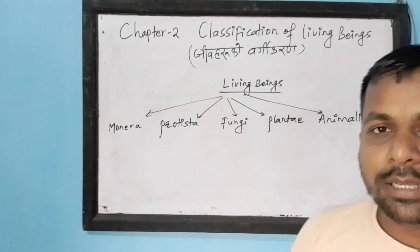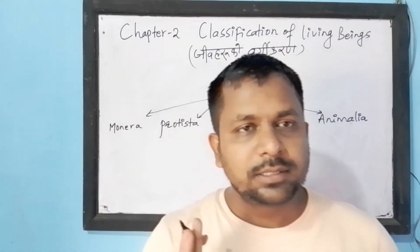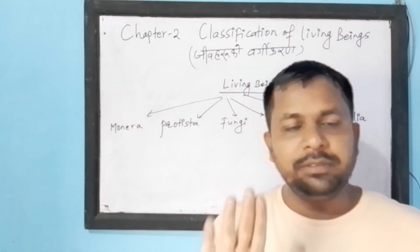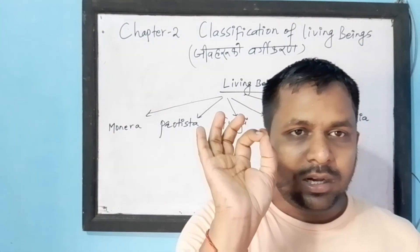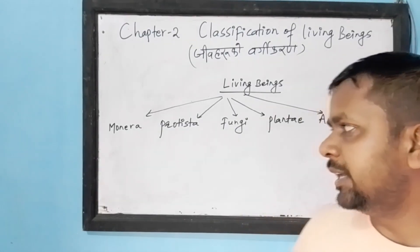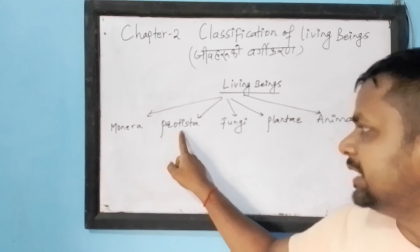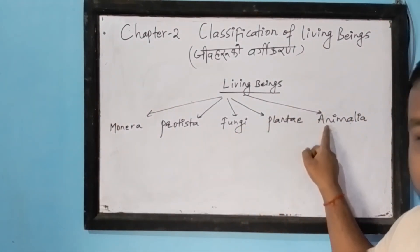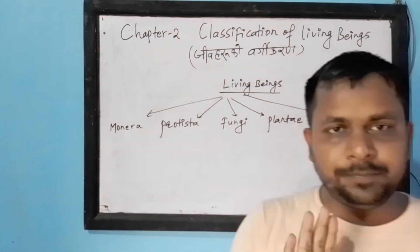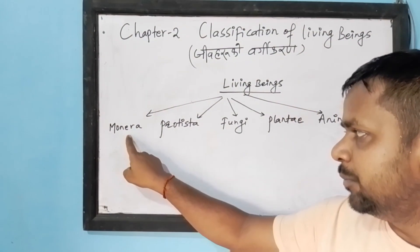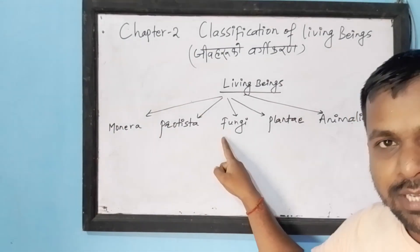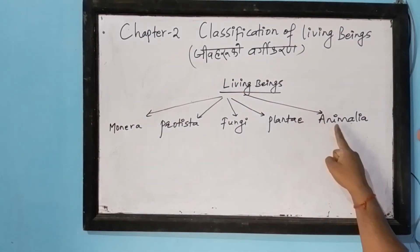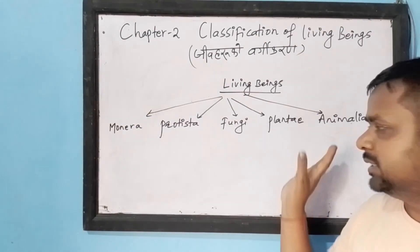Before we start this chapter, we need some background information. R.H. Whittaker has divided the living organisms into five kingdoms: Monera, Protista, Fungi, Plantae, and Animalia. In class 9, we have studied Monera, Protista, and Fungi, and in class 10 we have to study Plantae and Animalia.